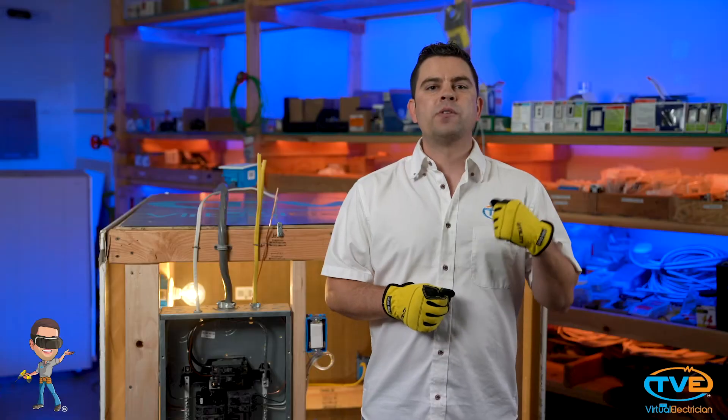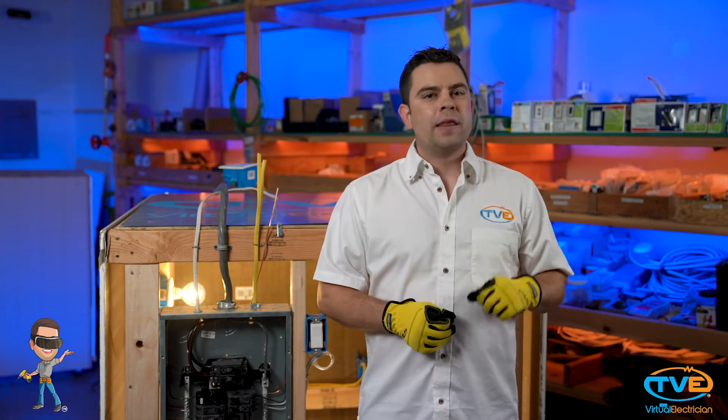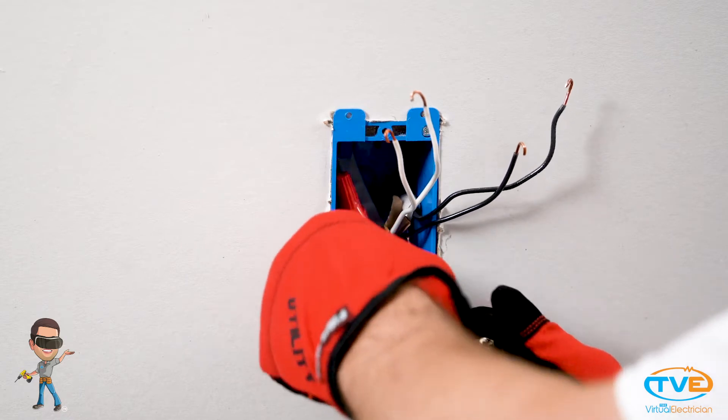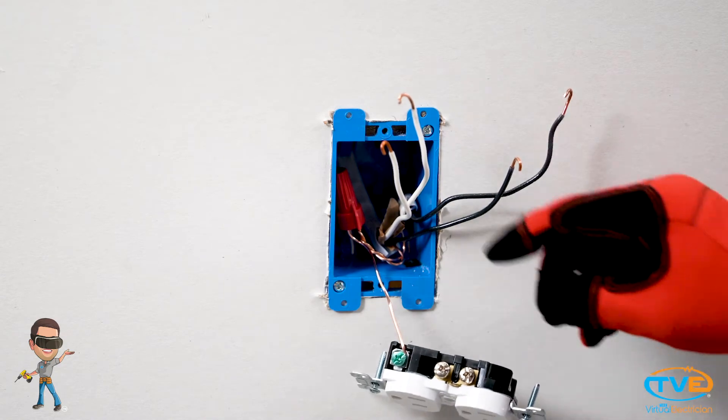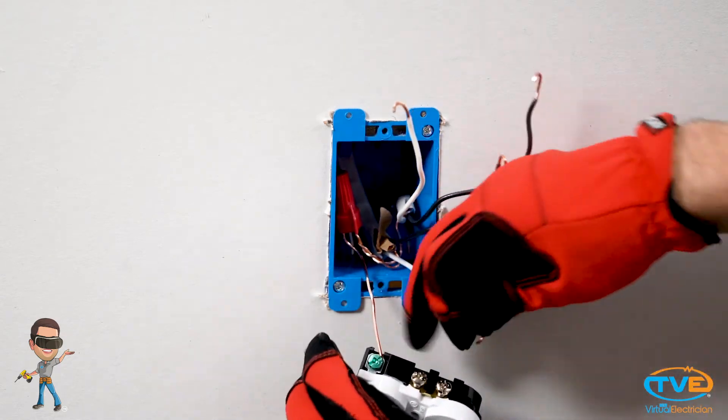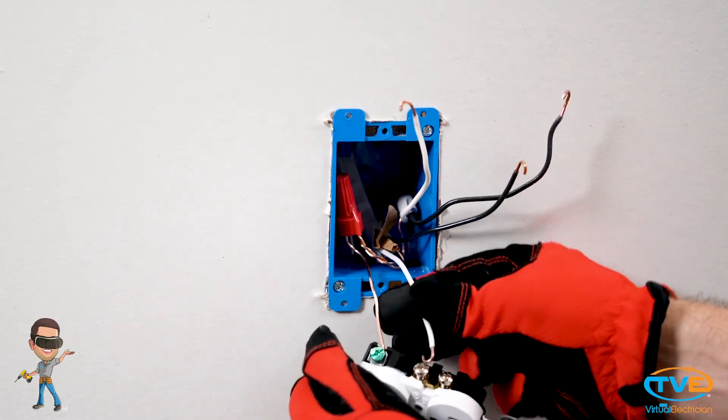For best practices, always make sure you wire the ground wire first, then the neutral, then the hot. Always put the loop on the screw the same direction the screw will tighten down clockwise. If you don't, you'll be fighting against yourself and may cause a loose connection.